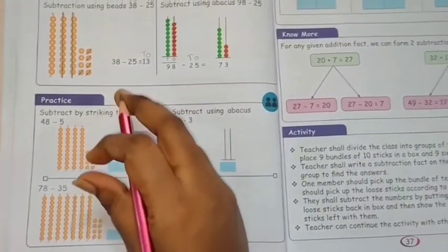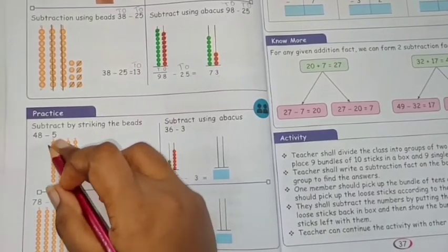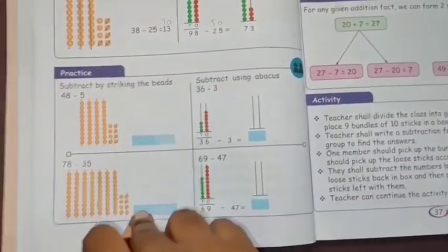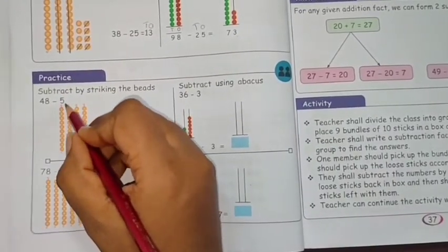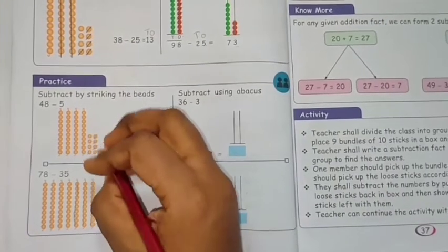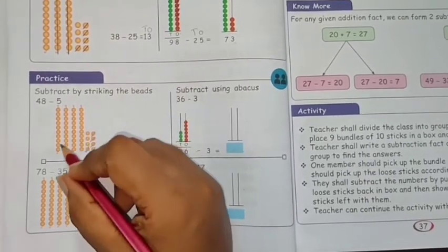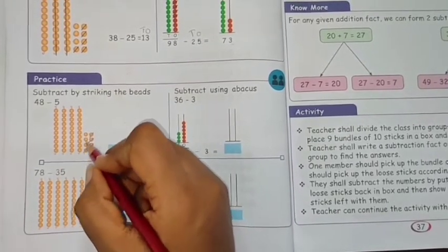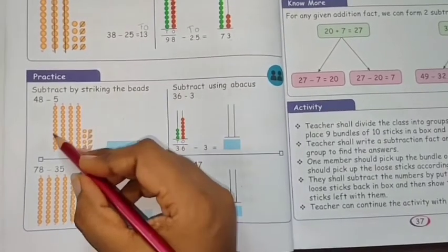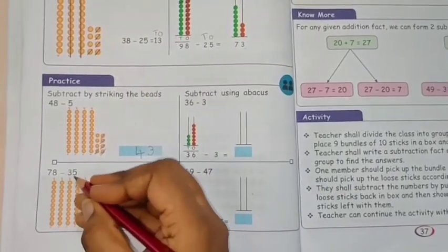Now we will see the book exercise — subtract by striking the beats. The teacher has already taught the method; now we are going to do it. For 48, the beats are given. We are going to subtract 5 — that's 48 minus 5. Strike out 5 beats in the ones column: 1, 2, 3, 4, 5. The tens number stays the same. Balance in ones: 1, 2, 3. So 43 is the answer.